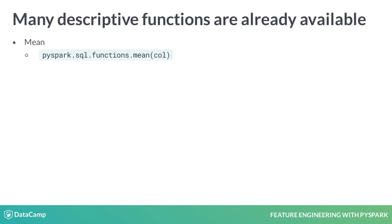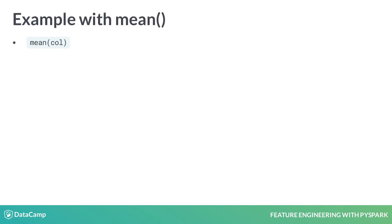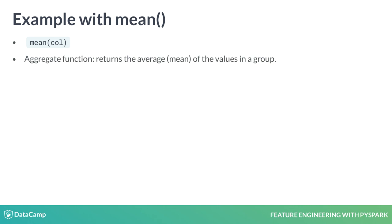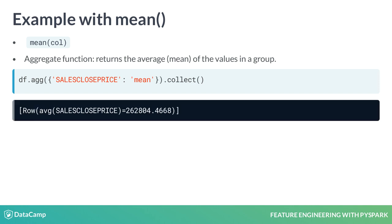To further help us understand our data, PySpark has many built-in descriptive functions available. The mean function is considered an aggregate function, and as such, it needs to be passed to the agg method along with the column to run it on as a dictionary. To force it to return results immediately, use collect.